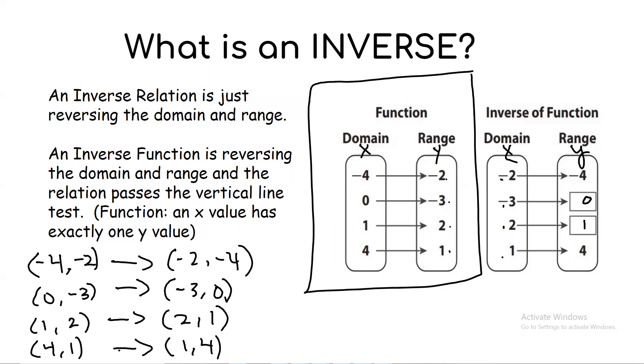In coordinate form: the inverse of (−4, −2) is (−2, −4); the inverse of (0, −3) is (−3, 0); the inverse of (1, 2) is (2, 1); and the inverse of (4, 1) is (1, 4). That's what an inverse does.